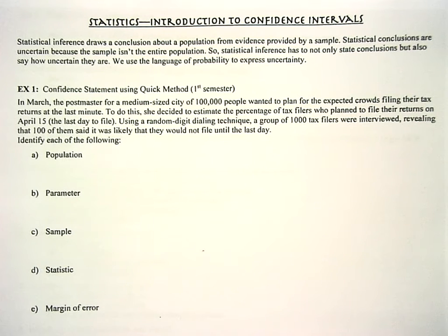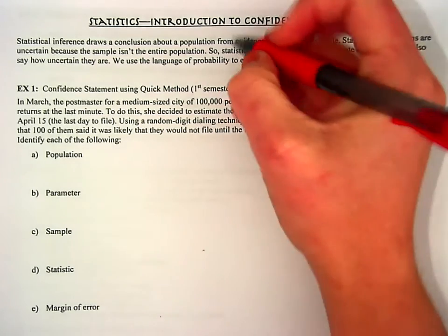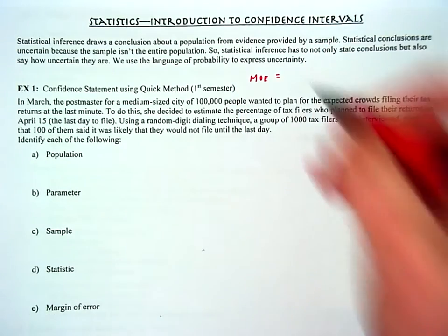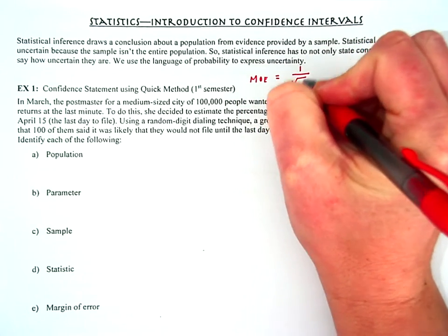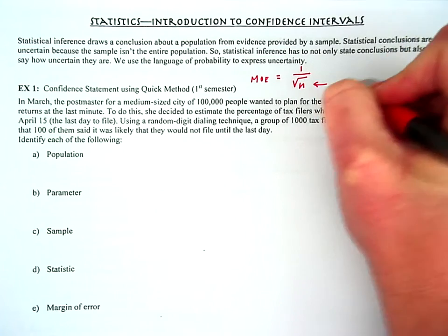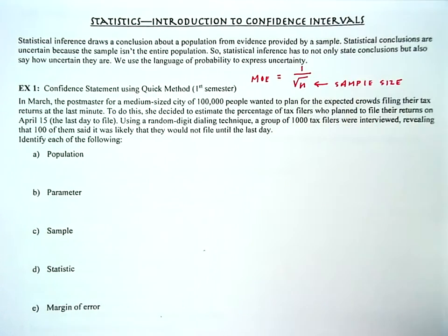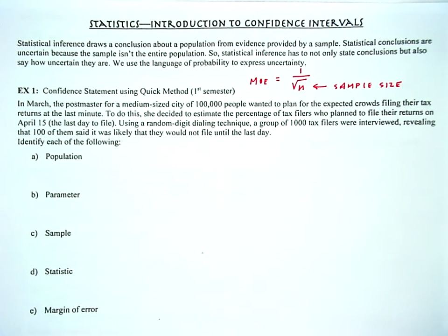This is a throwback to first semester where we talked about basic confidence statements. My goal was always to lay in that first layer of understanding so we can add a few more layers this semester. As a reminder, when we're getting the margin of error we used the QUIC method: 1 over the square root of n, where n is our sample size. We know this is only for 95% confidence. There are other levels of confidence out there, but we haven't addressed them yet — they are coming up soon.